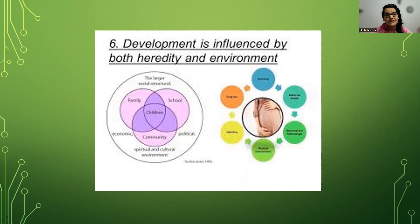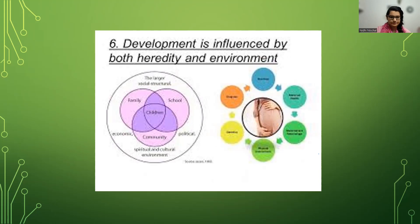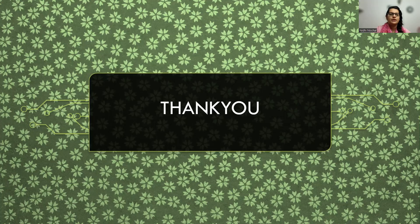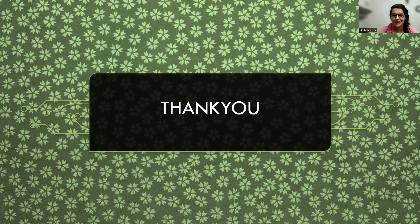Development is influenced by both heredity and environment. We can see in the Venn diagram that family, school, and community all come together to influence the development of the child. It's not only one thing. With this, our first topic is covered. I hope you liked the video and we'll see each other in the next video with another topic. Thank you.